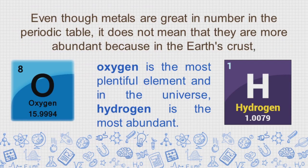Even though metals are great in number in the periodic table, it does not mean that they are more abundant because in the Earth's crust, oxygen is the most plentiful element.